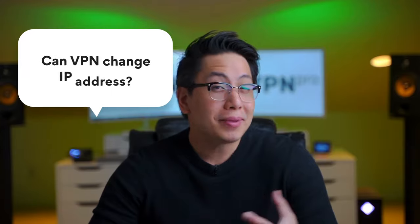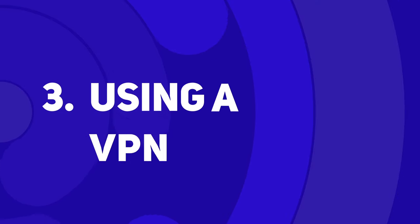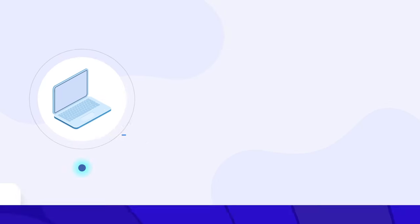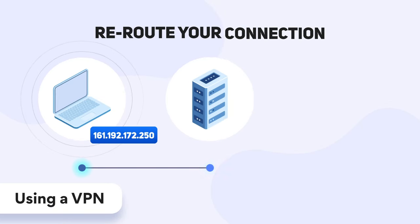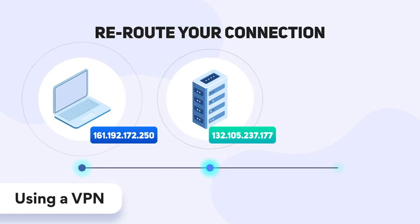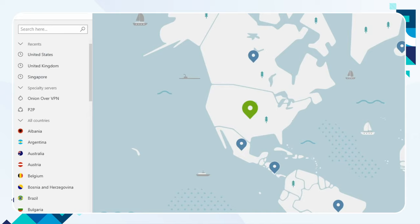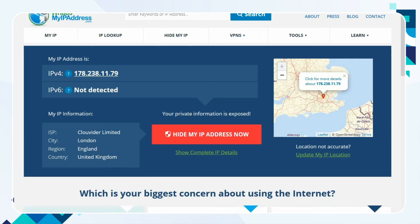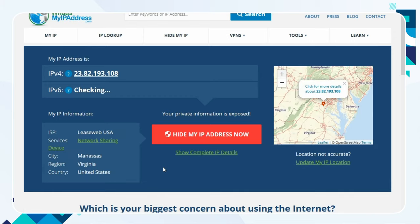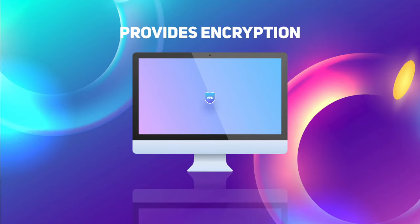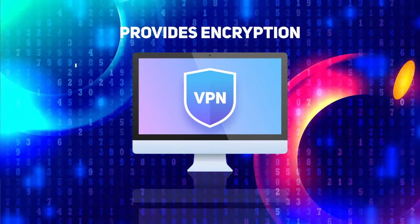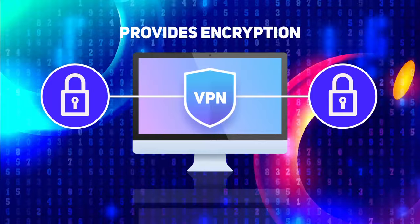Can a VPN change your IP address? Yes. Actually, changing your IP address with a VPN is the most efficient and useful method. Virtual private networks reroute your standard connection through a remote server, assigning you an IP address from that server. This way, at the end point of your connection — whether it's a website, a game, or anything else — the IP address of the VPN server and its location will be shown, not yours. VPNs also apply encryption to your connection, making sure that even if your traffic is intercepted, it doesn't reveal anything about you.